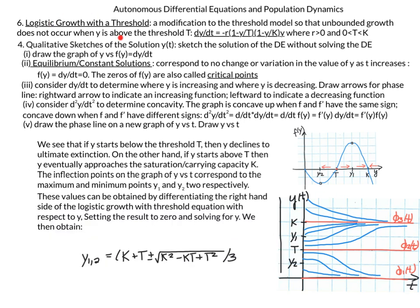This graph shows the characteristic of logistic growth with the threshold. If y starts below the threshold T, y declines to ultimate extinction, declining toward zero. On the other hand, if y starts above T, y eventually approaches the saturation or carrying capacity k. Initial values above T all converge to k. The inflection points on the graph of y versus t correspond to the maximum and minimum points y1 and y2. These values can be obtained by differentiating the right-hand side of the logistic growth with threshold equation with respect to y, setting the result to zero, and solving for y.